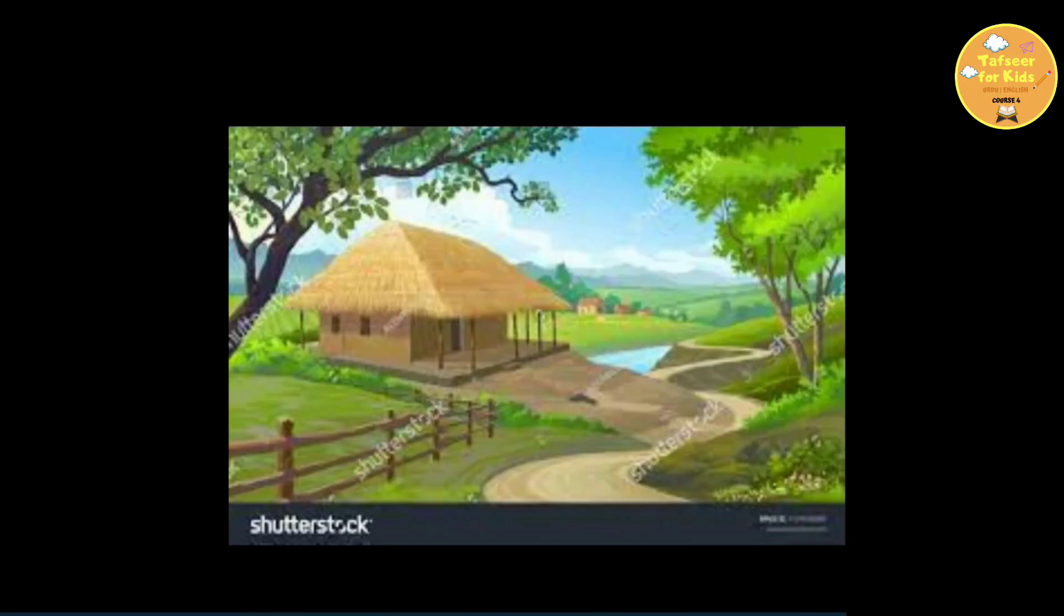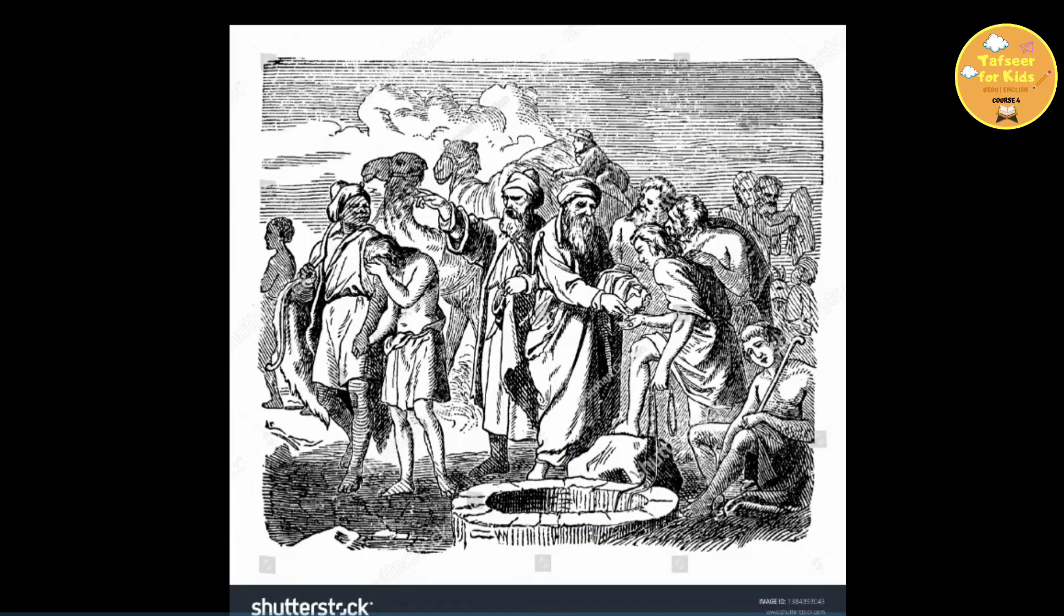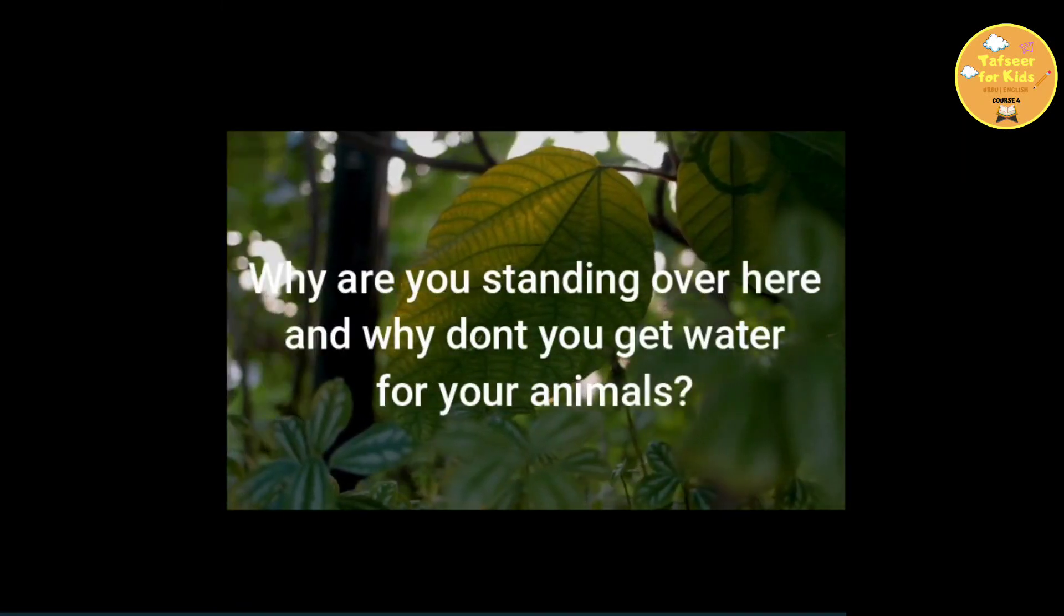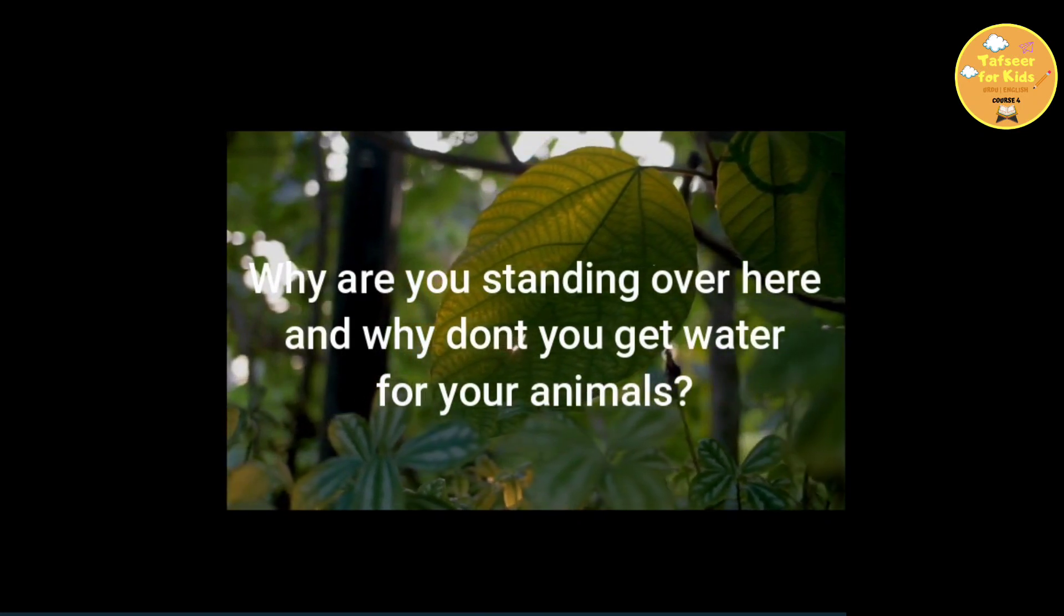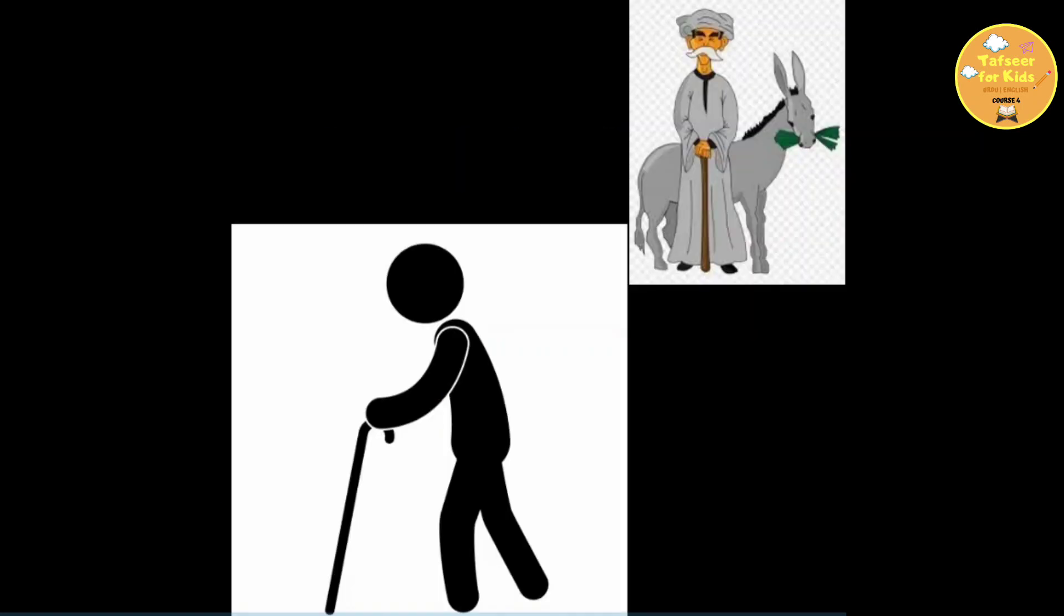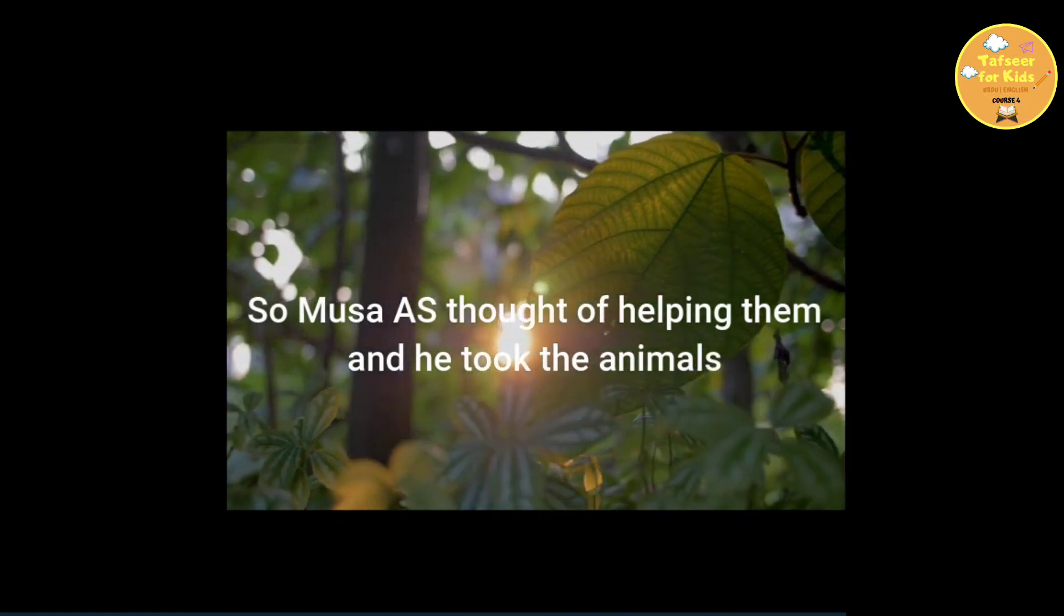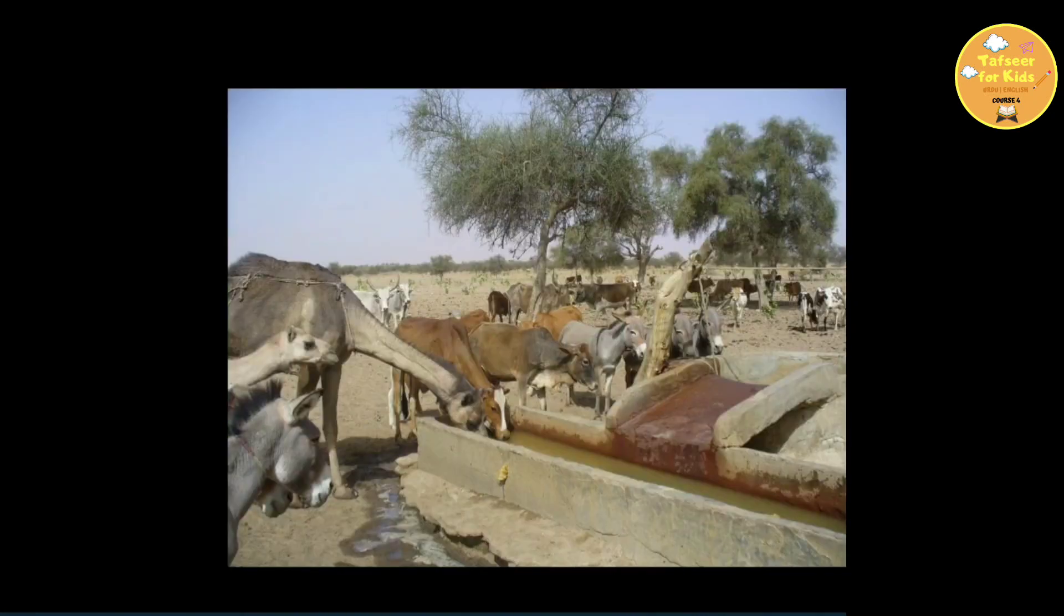So, he kept on running until he reached a small town where he saw that there were some people getting water from a well for their animals. And there were two girls who would move forward and then come back, move forward and then come back and they had their own animals too. So, he stood up and he asked those girls, why are you standing over here and why don't you get water for your animals. They said that we are girls and our father is an old man, he can't come to get water for the animals. So, we are just waiting for these men to go away so that we can get water easily. So, Musa alayhi salam thought of helping them and he took the animals, get them the water, hand them over back to the girls and went back and sat under the tree.